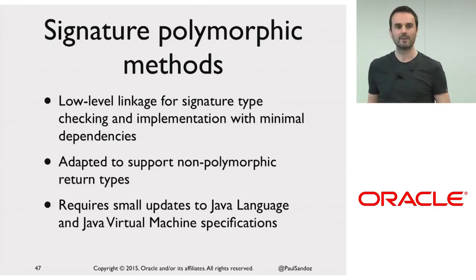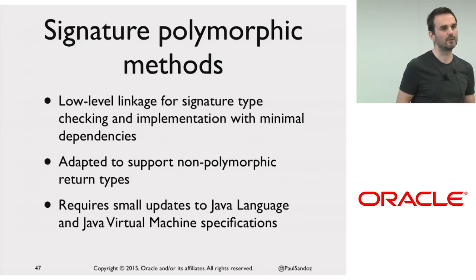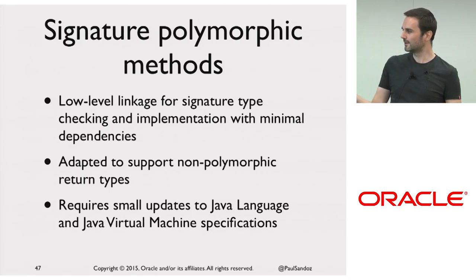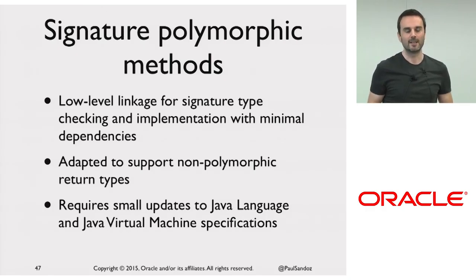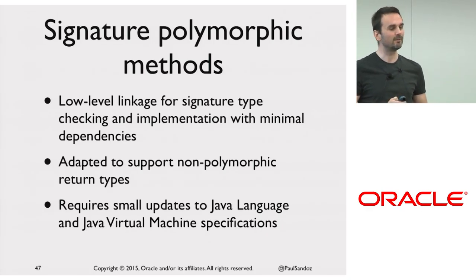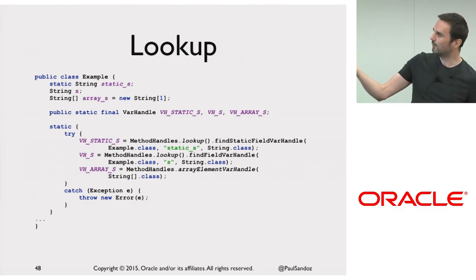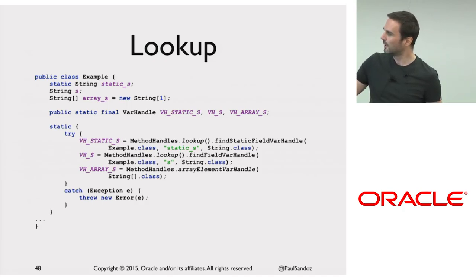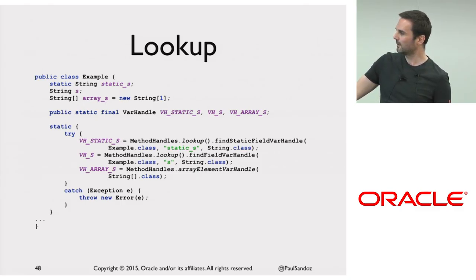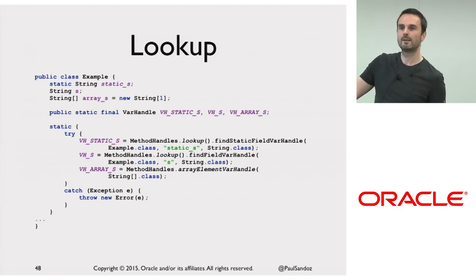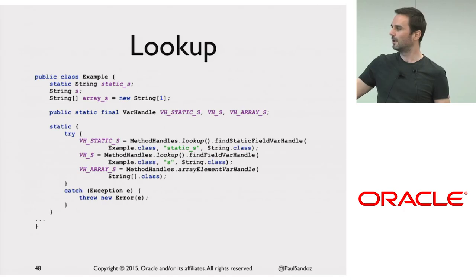It requires some small updates to the Java language and Java Virtual Machine Specification — it's kind of like a thin slice through the whole stack. Currently it's specified that the only signature polymorphic methods are those in MethodHandle, and I'm adding another one to that set. Here's an example of lookup: I can find a static field var handle by giving it the receiver, name, and type — exactly the same way as with method handles. I can look up an instance field or an array element, with the same access control checks.